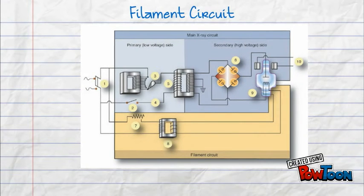Taking it back to the beginning for the last time, we're going to travel through the filament circuit. Starting at the main power supply, electricity travels to a step down transformer through a variable resistor. This step down increases current of electricity and decreases the voltage.